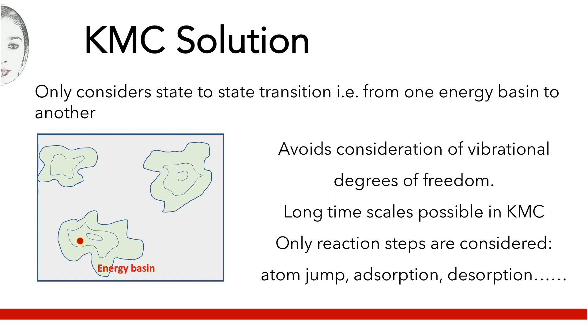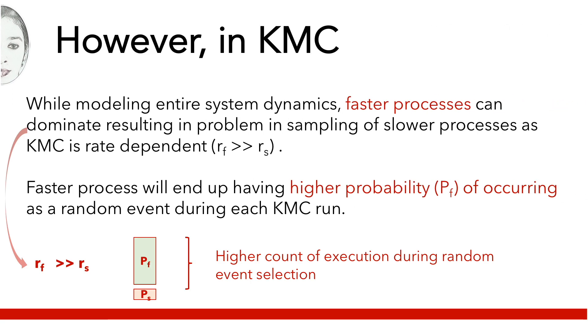Only reaction steps such as atom jumps, adsorption, desorption, etc. are considered. However, KMC still has its own shortcomings. Since probability of any event happening is dependent upon its rate constants rf and rs, a process with high rate, that is to say a fast process, will happen more and can dominate the results.